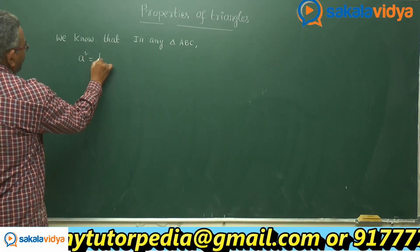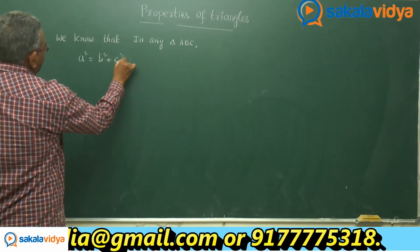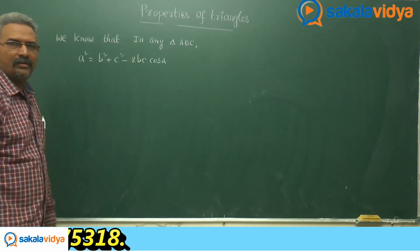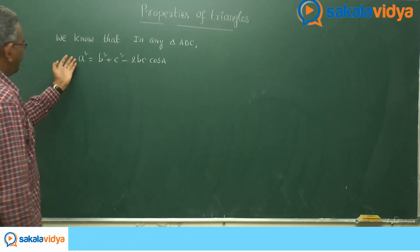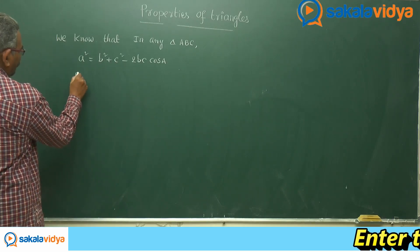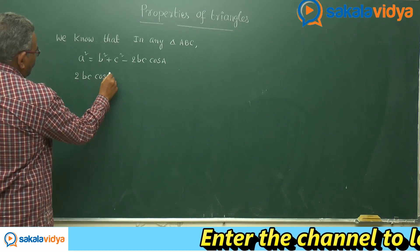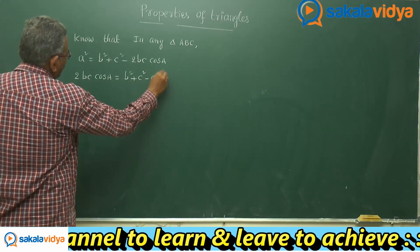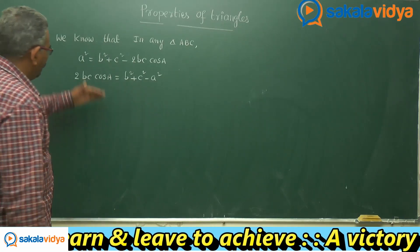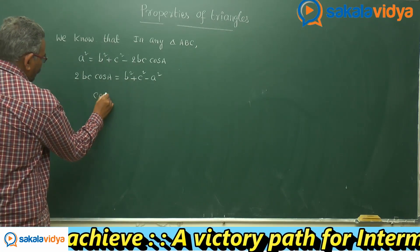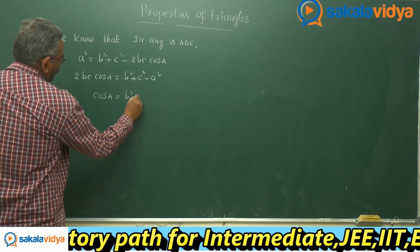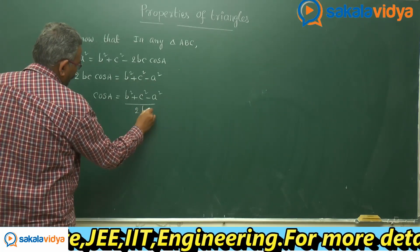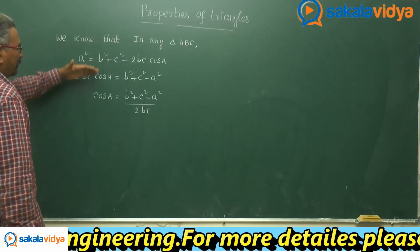a² = b² + c² − 2bc·cos A. Bringing −2bc·cos A to one side and a² to the other, we get 2bc·cos A = b² + c² − a². Therefore, cos A = (b² + c² − a²) / 2bc. We can deduce this from the cosine rule.